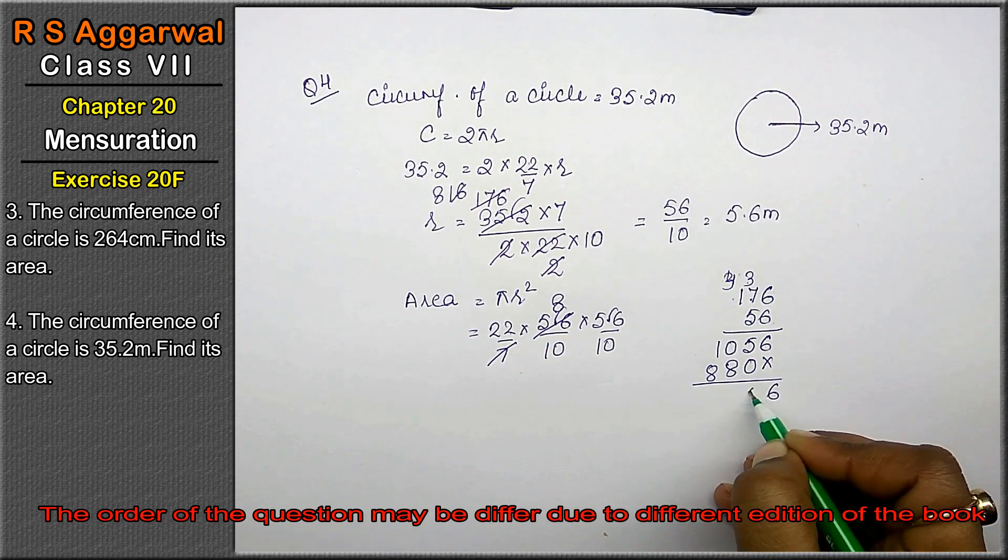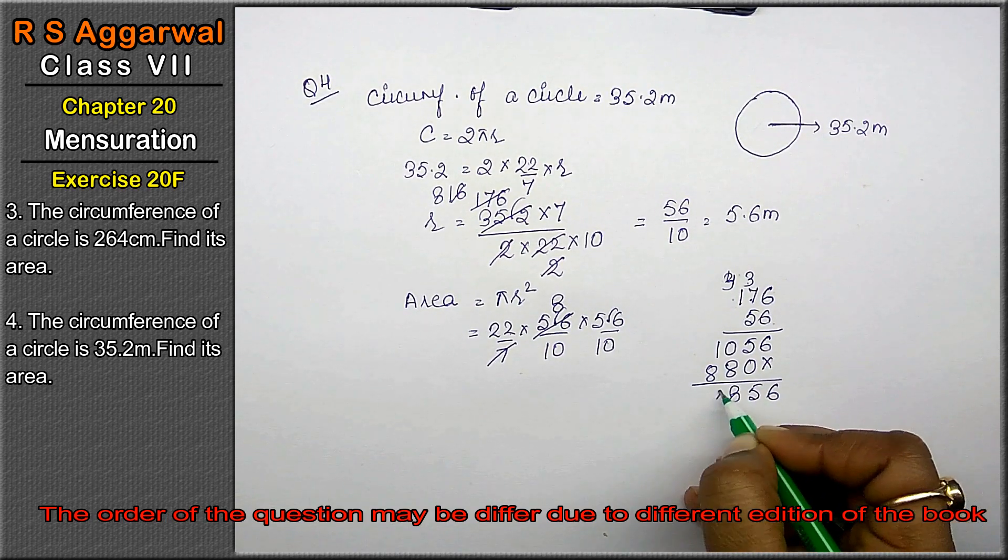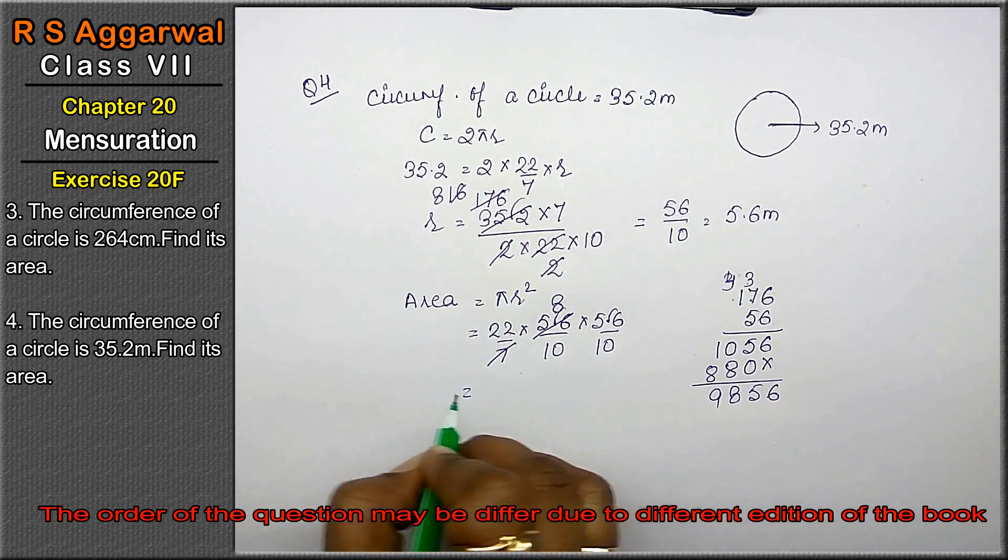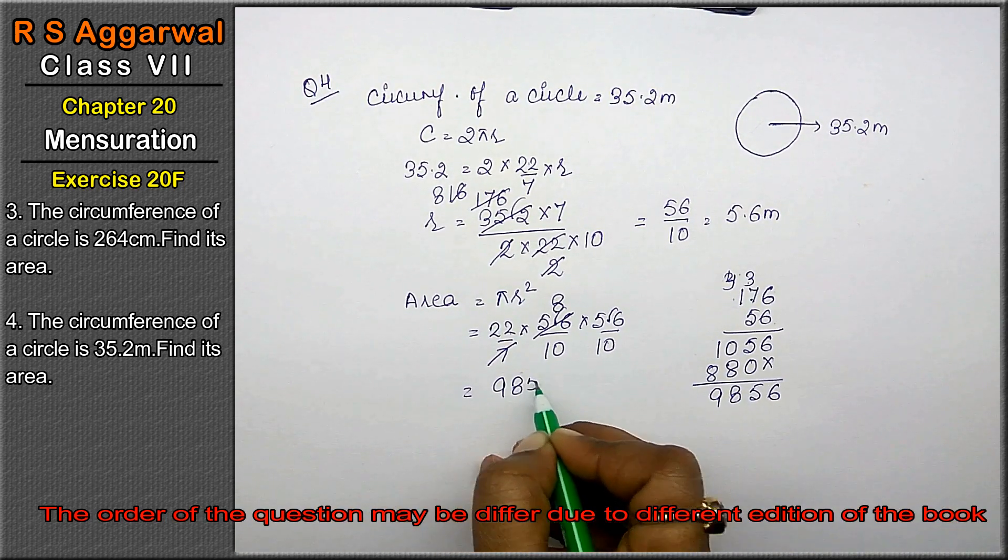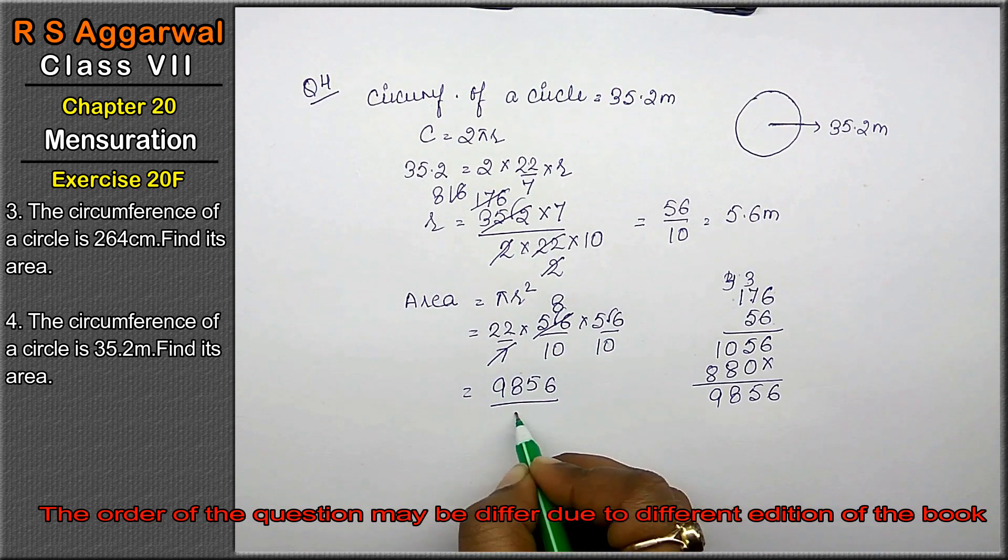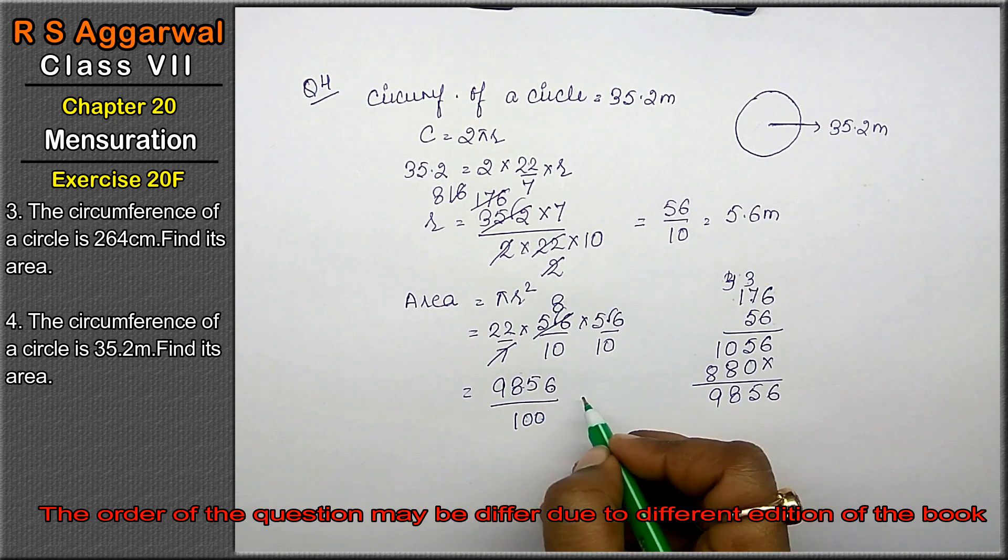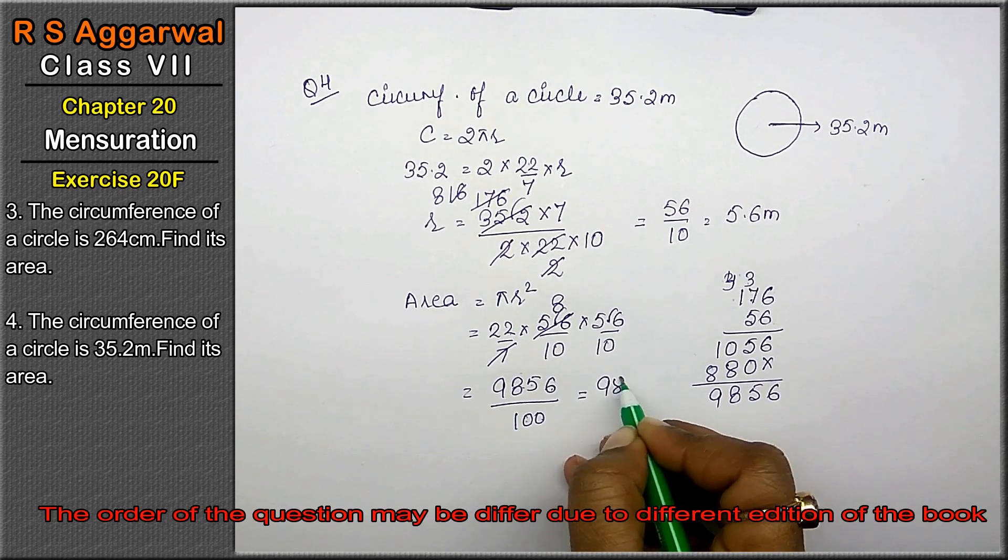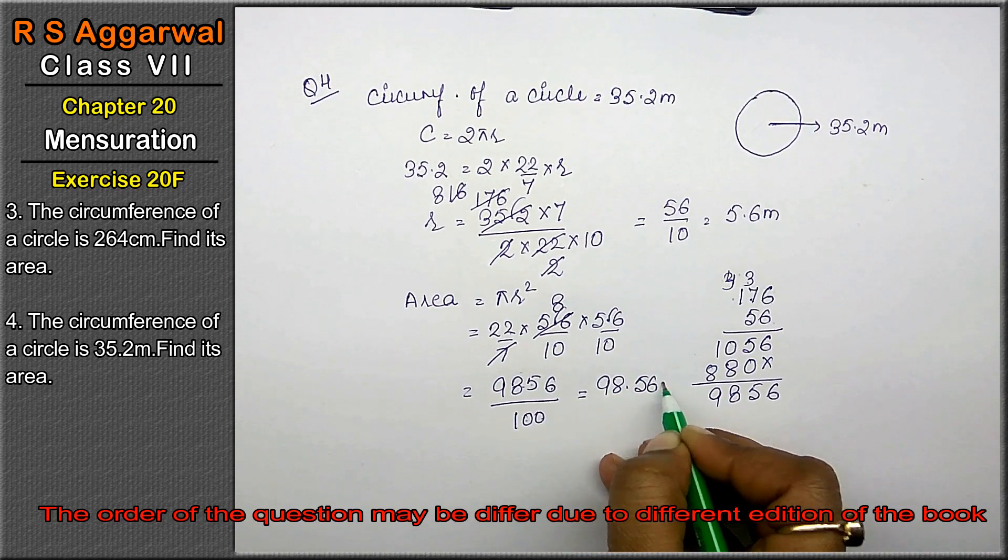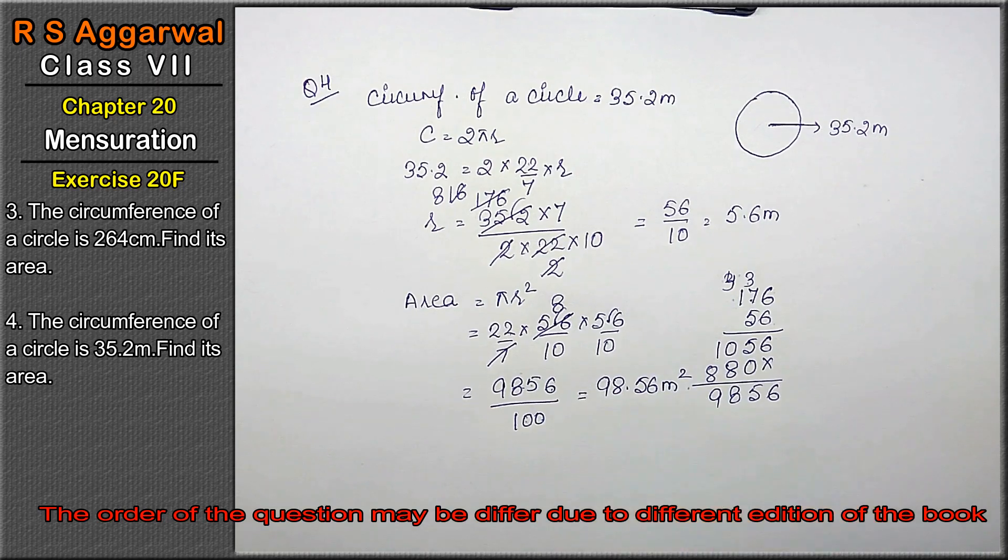6 seven 8. Now 6, 5, 8 and 9. 9, 8, 5, 6 upon 100. 2 zero hai nije. 2 two ke baad point lag jayega. So here again 98.56 meter square is the answer.